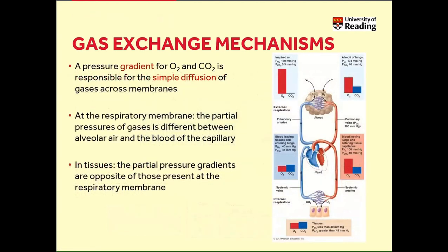Why is this important? Because these two laws are regulating the gas exchange mechanisms occurring in our bodies. A pressure gradient for oxygen and carbon dioxide is responsible for the simple diffusion of gases across the membrane. At the respiratory membrane, the partial pressure of gases is different between alveolar air and the blood of the capillary. In tissue, the partial pressure gradients are opposite to those present at the respiratory membrane.